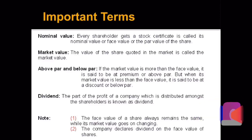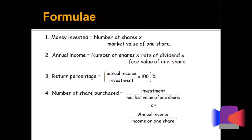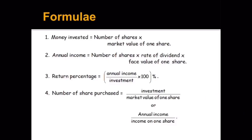Now let us move forward with the formulas. The first formula is money invested, which in simpler terms is number of shares into the market value of one share. If the price of one share in the market is rupees 20 and the number of shares is 100, it will simply be 100 into 20, that is 2000. We always calculate money invested using the market value, not the face value, because we are actually going to pay the market value.